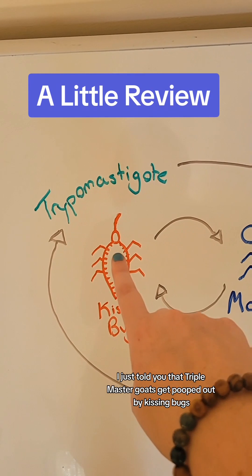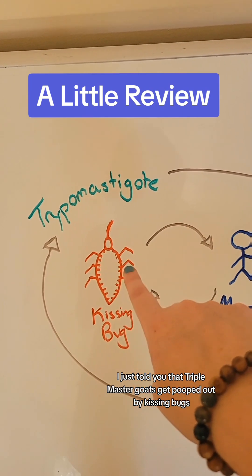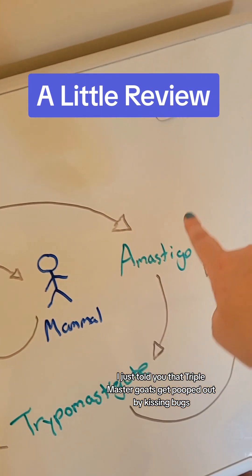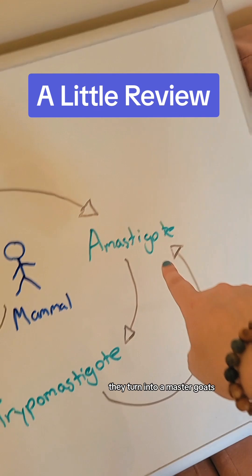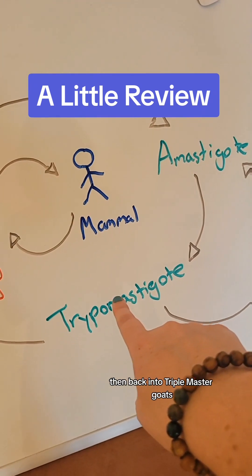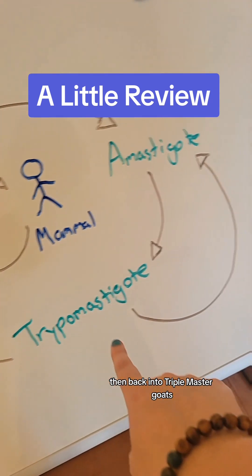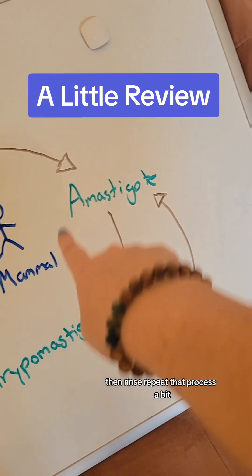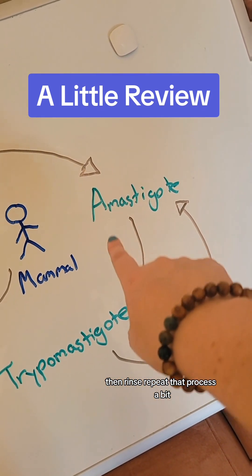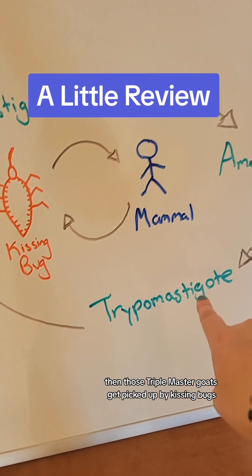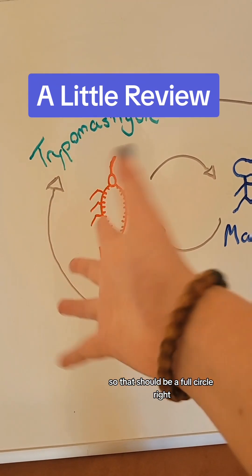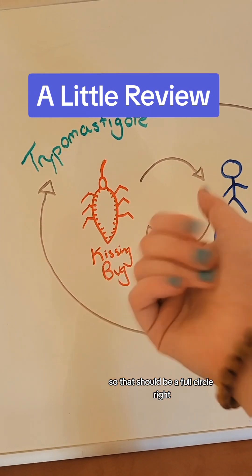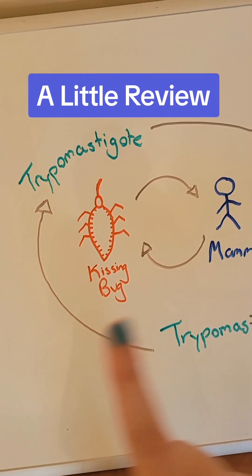Okay, that's a lot. Let's take a step back. I just told you that tripomastigotes get pooped out by kissing bugs, picked up by mammals, they turn into amastigotes, then back into tripomastigotes, then rinse-repeat that process a bit, then those tripomastigotes get picked up by kissing bugs. So that should be a full circle, right? Wrong.